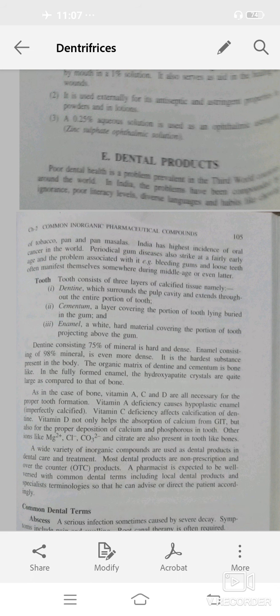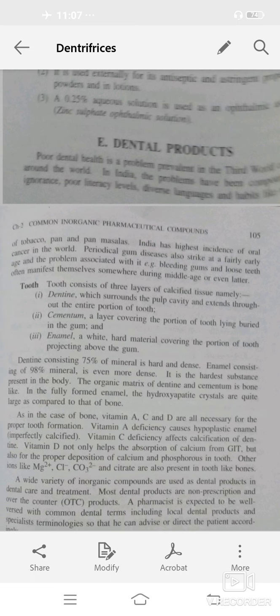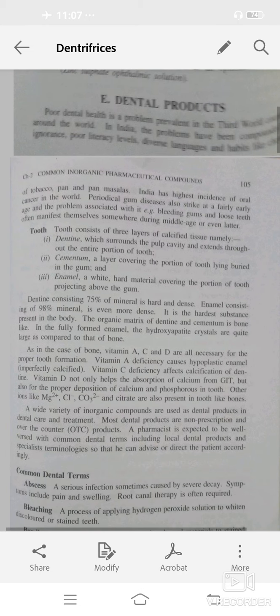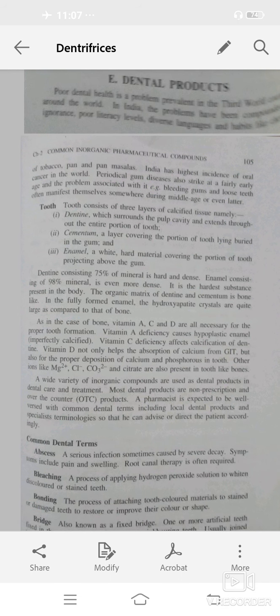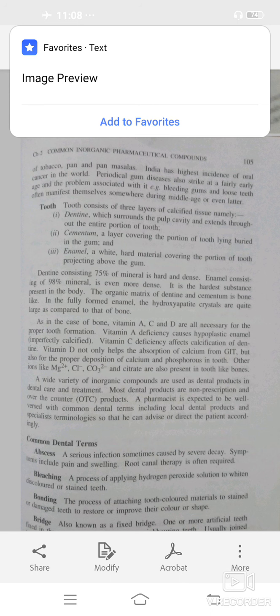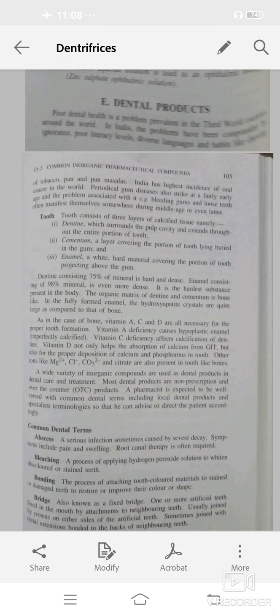Enamel is white hard material covering the portion of tooth projecting above the gums. In the innermost portion of the tooth, dentin consists of 75% minerals that is hard and dense, while enamel consists of 98% minerals, making it the hardest substance present in the body.